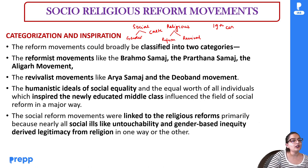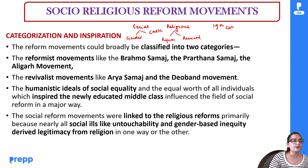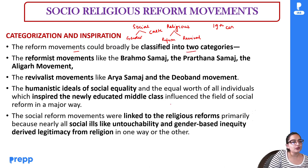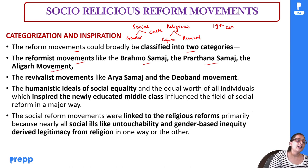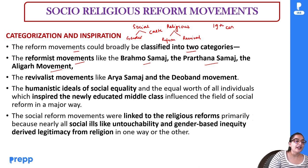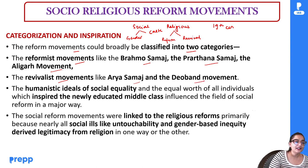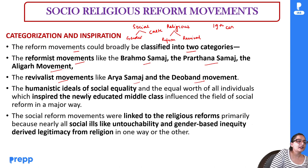So the small gist is this: in the 19th century social-religious reform movements, our movements are in two categories. The reformist movement includes Brahmo Samaj, Prarthana Samaj, and the Aligarh movement — these are reformists trying to change current practices. We also have a revivalist movement such as the Arya Samaj or Deoband movement, who want to go back to a proper religious ideal.